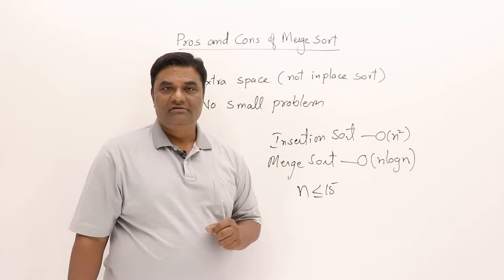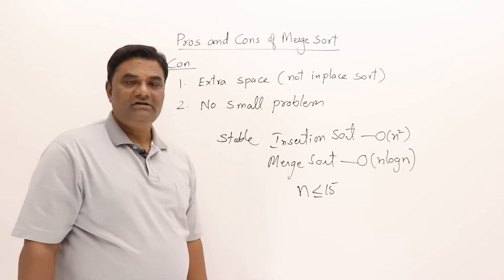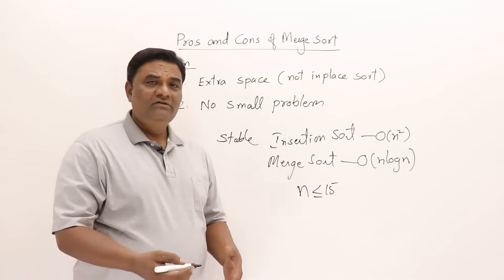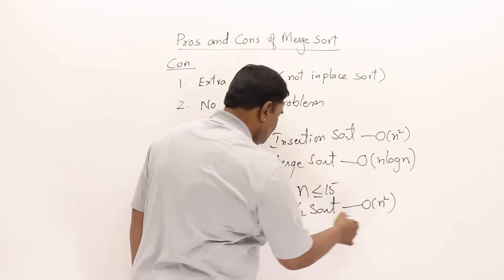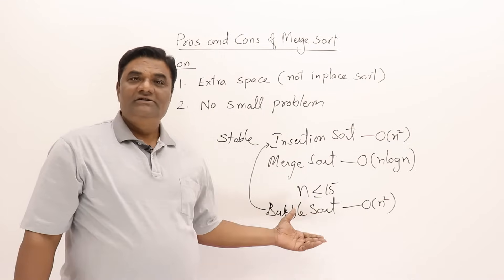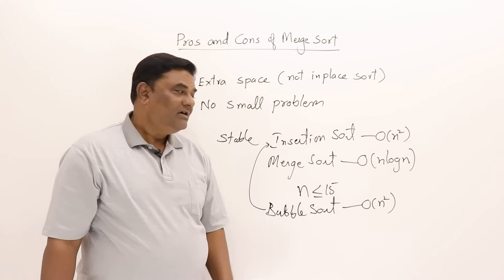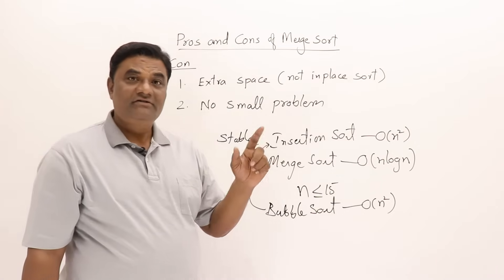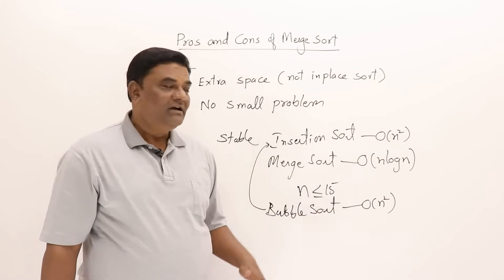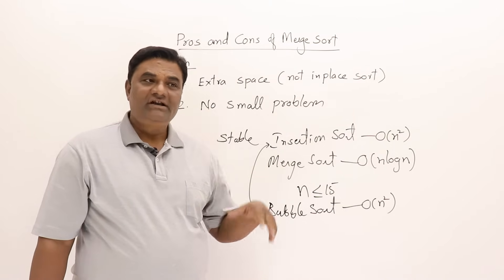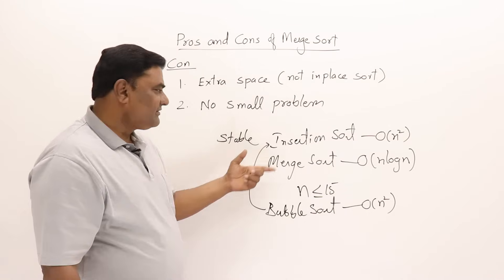We use insertion sort because it is also stable. Bubble sort is also O(n²) and stable, so it could be used instead. Both insertion sort and bubble sort are also suitable for linked lists. A separate video will compare all sorting algorithms on various criteria.